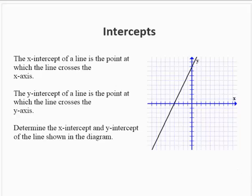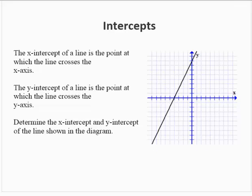The x-intercept of a line is the point at which the line crosses the x-axis. Similarly, the y-intercept of the line is the point at which the line crosses the y-axis. So we're given this graph of an equation of a line. Let's determine the x-intercept and the y-intercept.